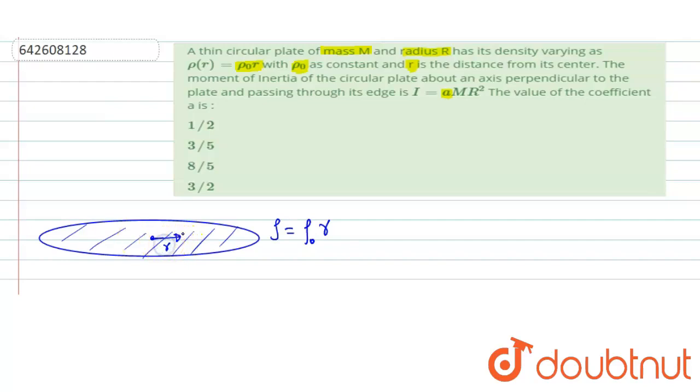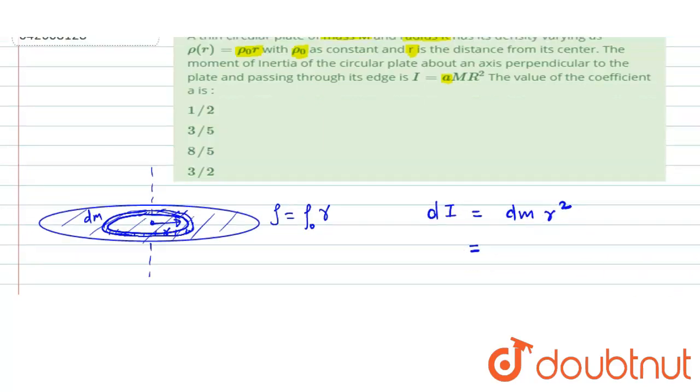So let's say at a general distance r we are taking an element whose thickness is dr, and we are finding its moment of inertia about this axis. This element has mass dm. Now as we know, the moment of inertia of the ring about an axis passing through its center is mr square, where r is the radius of that ring. So we can write the moment of inertia of the element as dm into r square.